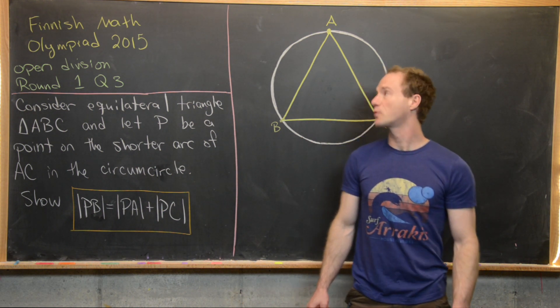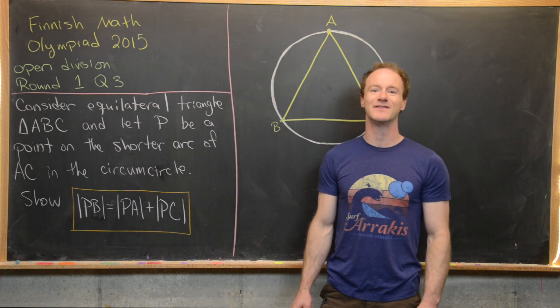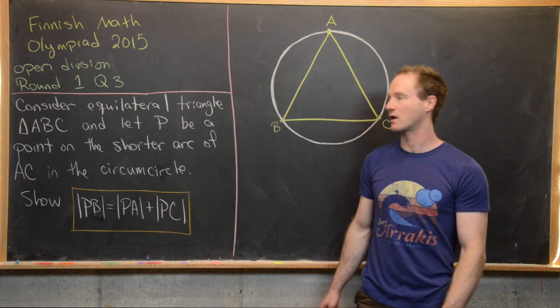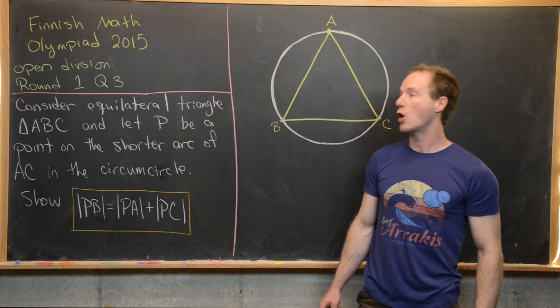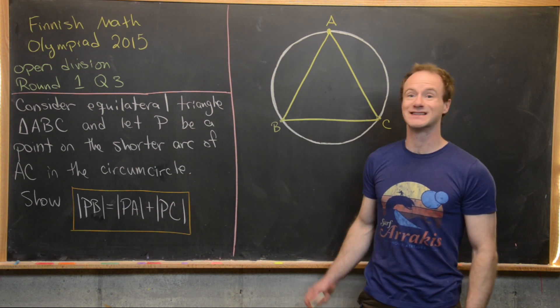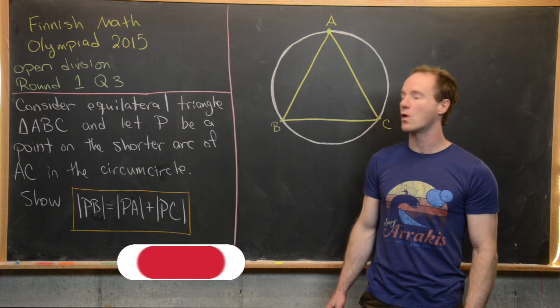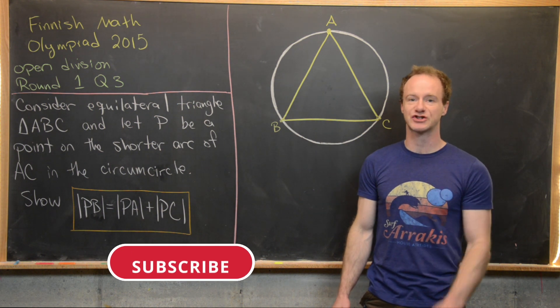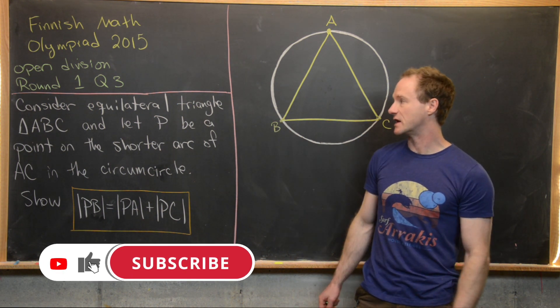Here we're going to look at two problems from the 2015 Finnish Mathematical Olympiad. They are both from the open division. The first one is a geometry problem from round one and it is question three.